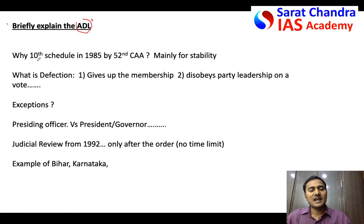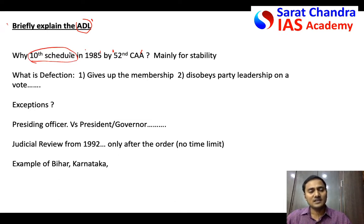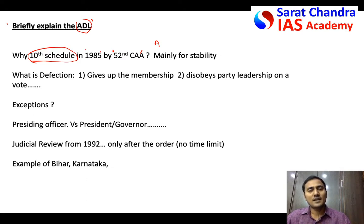First, explain the anti-defection law briefly. The anti-defection law was inserted into the Constitution of India through the 52nd Amendment in 1985 via the 10th Schedule. The reason it was inserted was the problem of 'Aya Ram Gaya Ram' — politicians, MLAs or MPs changing parties frequently, which destabilized governments because the majority party could lose its majority. This led to government instability, and to maintain stability, the anti-defection law was introduced.